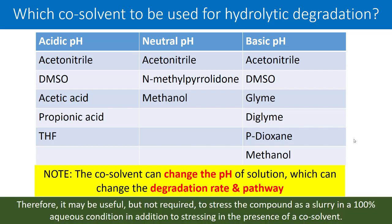It may be useful, though not required, to stress the compound as a slurry in 100% aqueous conditions in addition to stressing in the presence of co-solvent. If there is a large difference in the degradation profile when a co-solvent is added, it is worth investigating whether that degradation is due to hydrolysis or a secondary interaction caused by the co-solvent. Thank you for watching — I hope you now have a better understanding of selecting a suitable co-solvent during hydrolytic forced degradation.